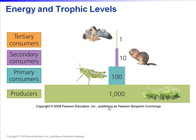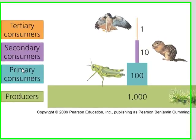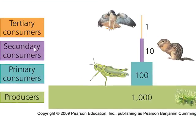Energy decreases at higher trophic levels. At each trophic level, most of the energy that organisms obtain and use is lost as waste heat through respiration. Only a small portion of the energy is transferred to the next trophic level through predation, herbivory, or parasitism. Again, we have producers, primary consumers, secondary consumers, and tertiary consumers.